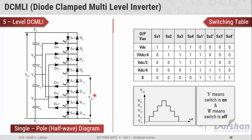One pole has the ability to produce only the half cycle of the complete AC output signal. In the switching table, wherever a 1 exists, that means the switch is in the on state condition, and 0 means the switch is in the off state condition. The first column defines the magnitude of the level. There are five levels: the first is 0, the second has magnitude VDC/4, the third is VDC/2, the fourth is 3VDC/4, and the fifth is VDC.